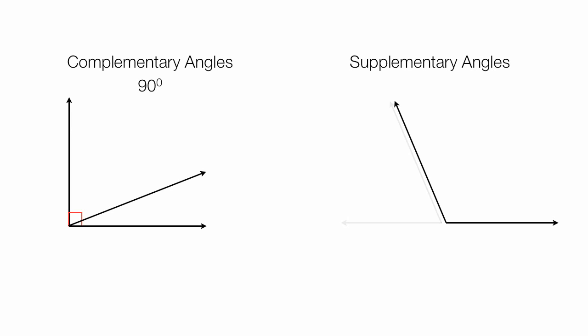Complementary angles are two angles that add up to 90 degrees. Supplementary angles are two angles, when combined, add up to 180 degrees.